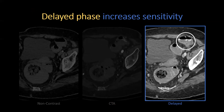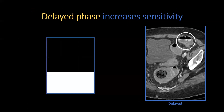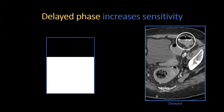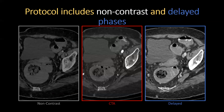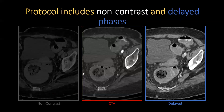Why does the delayed phase help? If you have a bleed that's pouring into a container, with greater time elapsed, more volume goes into that container, which makes it easier to detect. An alternative protocol would be to use dual-energy CT to derive non-enhanced or virtual non-contrast images.